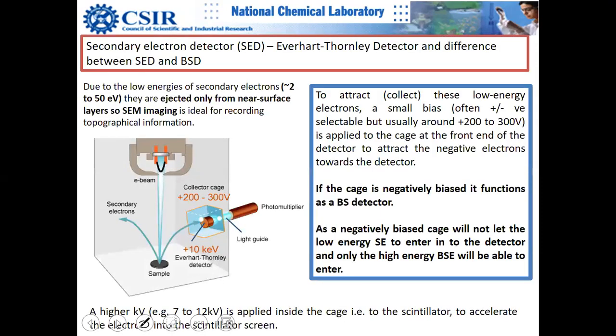Detectors are becoming much more advanced. Earlier there was only the Everett-Thorne detector type. The collector cage has positive voltage so that outgoing secondary electrons can be drawn toward it. This is the standard detector, but it has a serious problem.